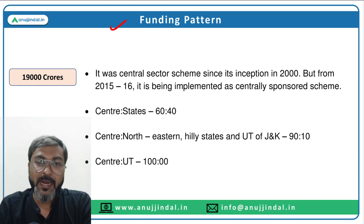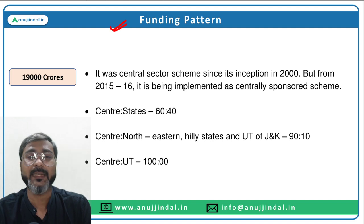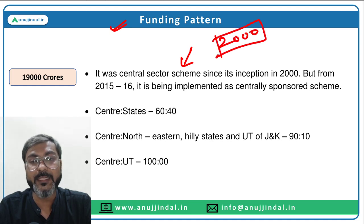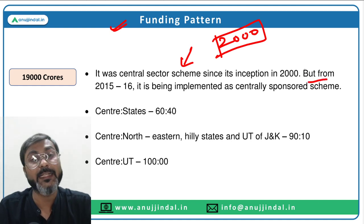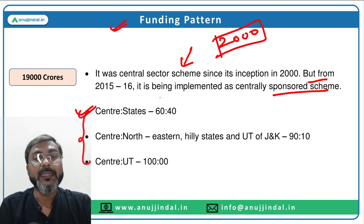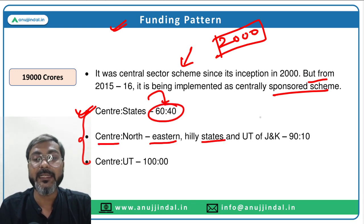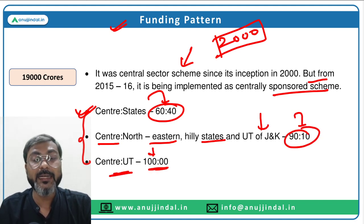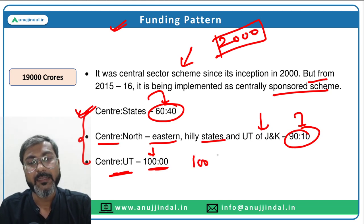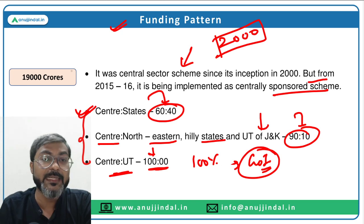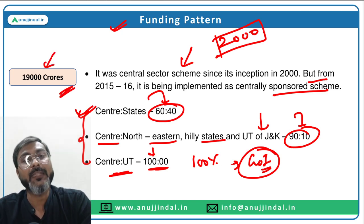Regarding the funding pattern: it was launched as a central sector scheme in the year 2000, but from financial year 2016 it is being implemented as a centrally sponsored scheme. The funding ratio is 60:40 for center and state, 90:10 for northeastern and hilly states and the UT of Jammu & Kashmir, and 100:0 for all other union territories. In Union Budget 2022-23, ₹19,000 crores has been allocated.